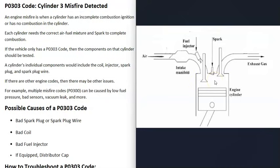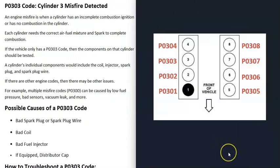When you get a misfire code, the combustion is not happening, or it's happening sometimes and not other times. Something's going on that's causing an issue, and it's going to require troubleshooting to know why.